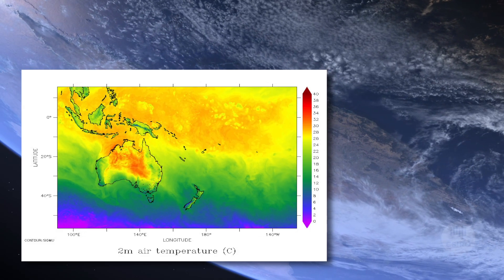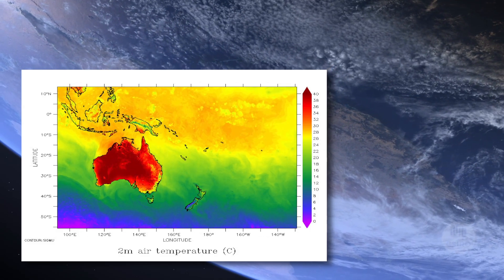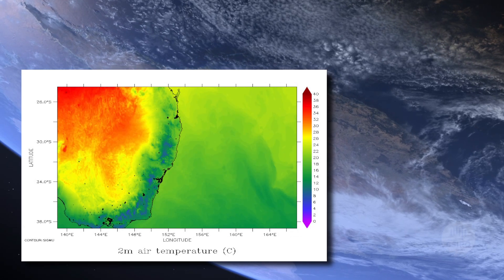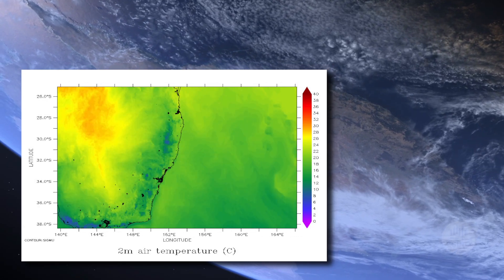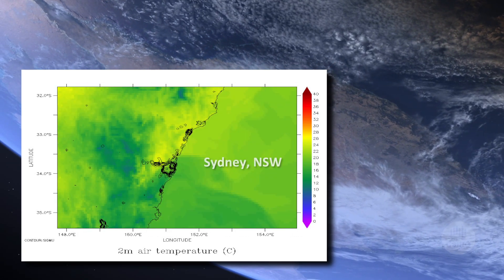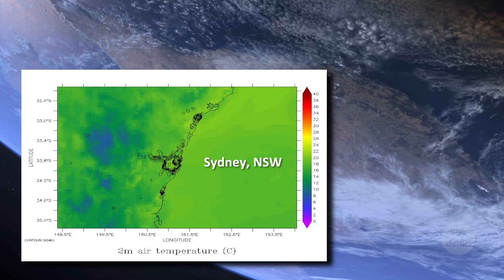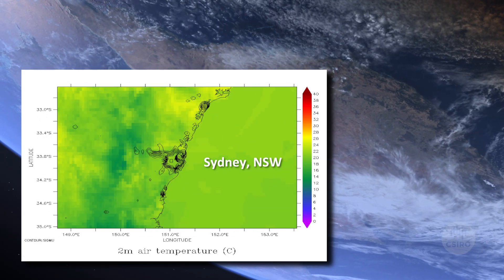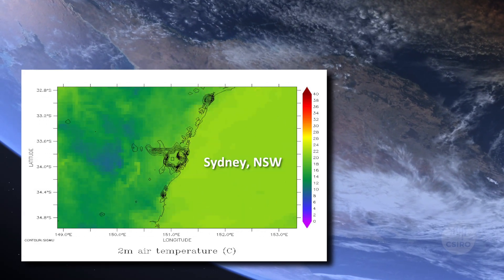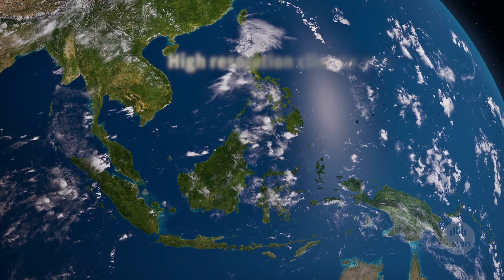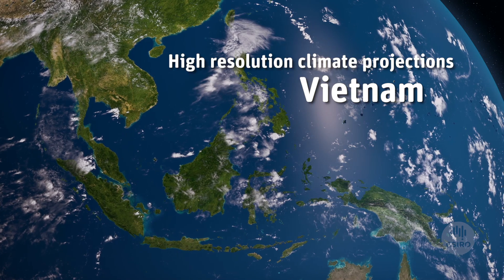Because of that coarse resolution, they can't capture some of the local and regional effects that are really important. So what we've done is develop a technique to take this global information and zoom in to very high resolution, which means much finer detail over a small region of the globe, providing more specific climate change information for that region.